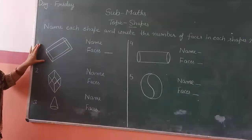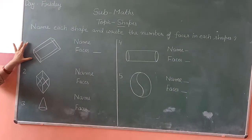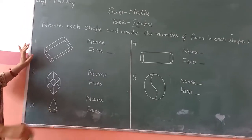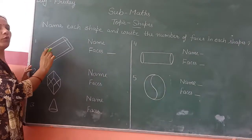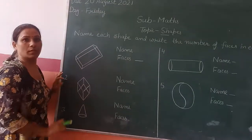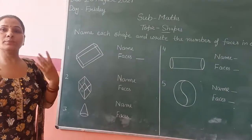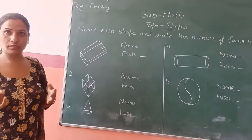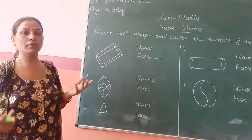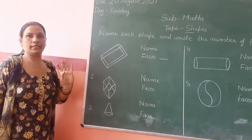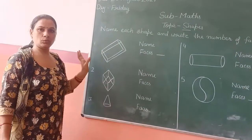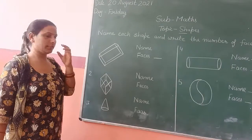Ok? Betta, ye kya hai? Shape. Hame each shape se name or face count karnye hai. What is face? Face kya hodha? Face means front. Hemara dheko, sakkar face saamne hodha na.